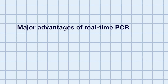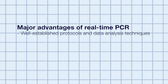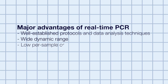The overwhelming advantage of real-time PCR is that it's a broadly accepted technology with well-established protocols and data analysis techniques. Other advantages include a wide dynamic range for detection, a low per-sample experimental cost, and high sample throughputs.